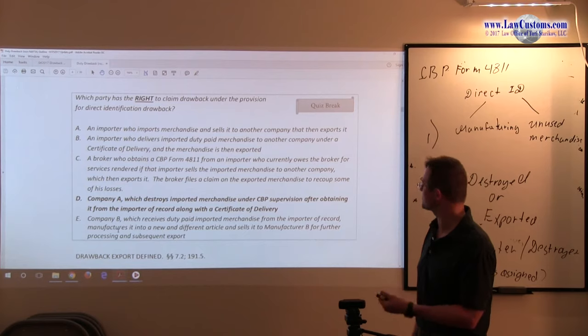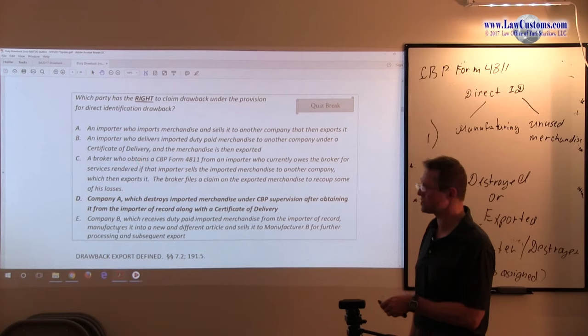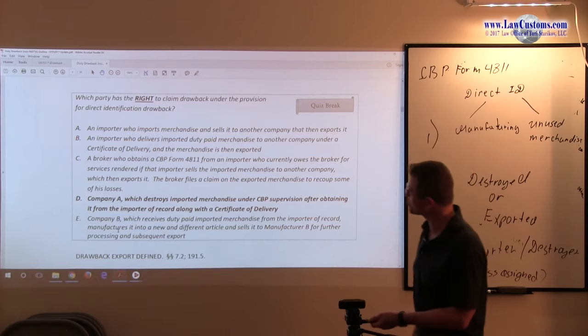The importer sells the imported merchandise to another company which then exports it, so the importer is not the default authorized person because it is the exporter, another company, which is the default authorized person, provided the appropriate transfer and chain of custody is established. The broker who files a claim—customs doesn't care about his losses. He is not an appropriate party because form 4811 establishes the person who would manage that person's money, not take ownership. And in the context of drawback, it's irrelevant because the default party is the exporter, not the importer, making C an incorrect answer choice.